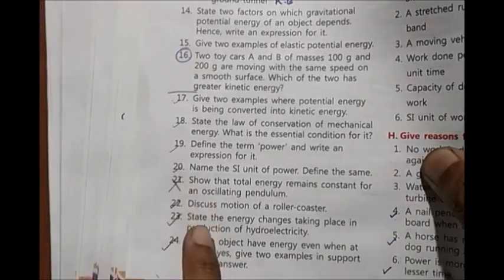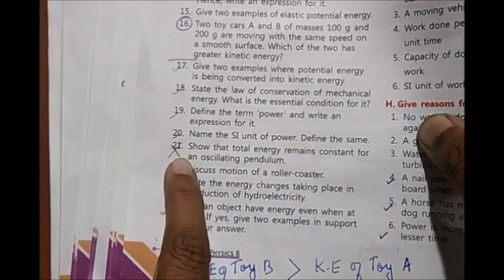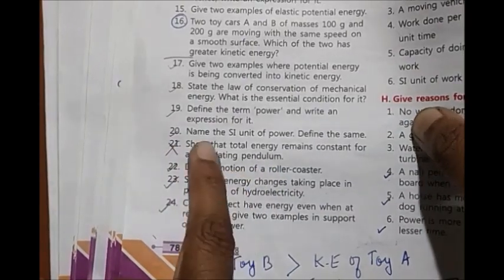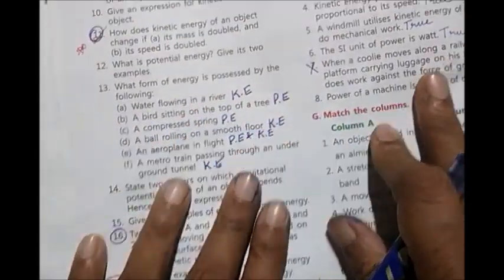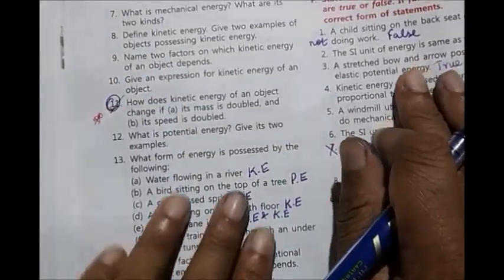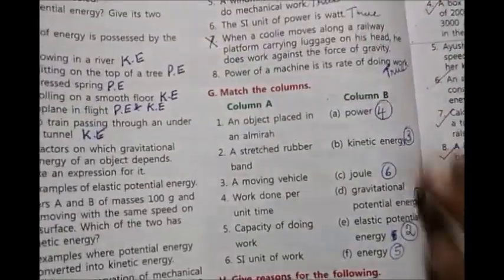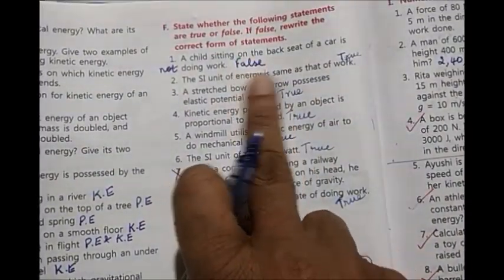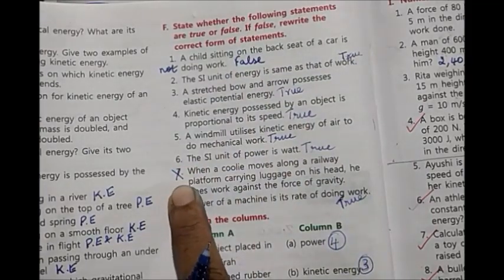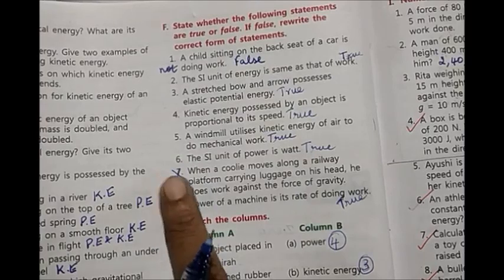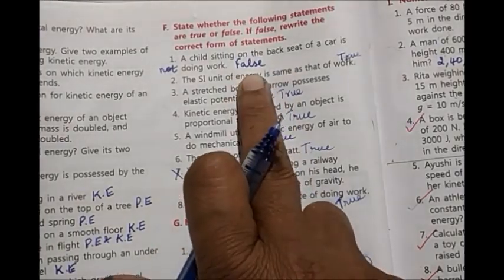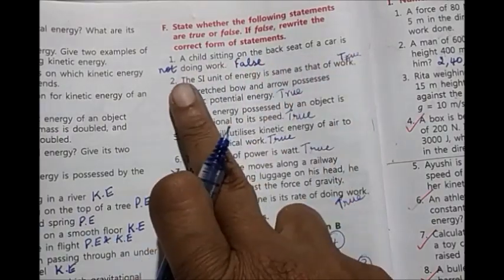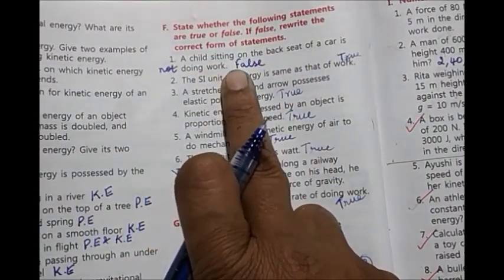Coming to 21st question, you can cut it off. We have not done oscillating pendulum, so you need not write this answer. Come to true or false. First one is false. Rest all are true. You can cut off the seventh one, that is also not in the syllabus. First one is false, so the right answer will be: a child sitting on the back seat of a car is not doing work.